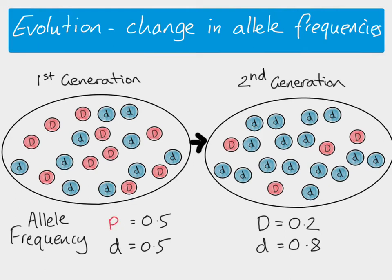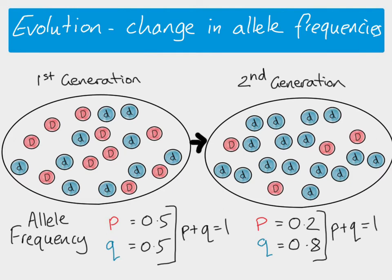Instead of using the letter D, we can use P to represent the dominant allele. It doesn't matter what gene we're looking at in any population — we can just use the letter P to represent whatever that dominant allele is. And then we can use the letter Q to represent the recessive allele in any situation. What we can see is that P plus Q equals 1, and it must be, because we've only got two alleles — one dominant and one recessive — in any gene pool; you must have a total of 1. Whether or not the population is evolving, P plus Q will always equal 1, and we can use this equation to help us calculate these things.